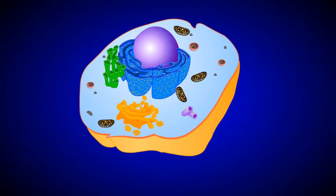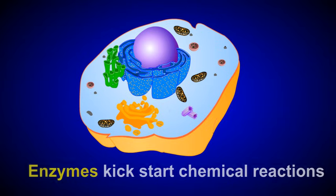Most of the chemical reactions that occur in your cells do not occur spontaneously. Instead, cells rely on proteins called enzymes to kick-start chemical reactions and speed them up, enabling cells to get the most out of the energy sources available to them. In fact, if it weren't for enzymes, chemical reactions would proceed too slowly to support life.